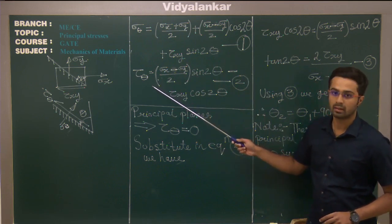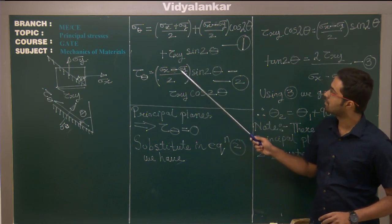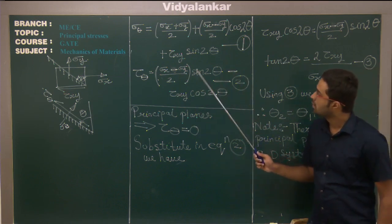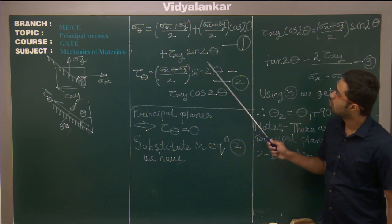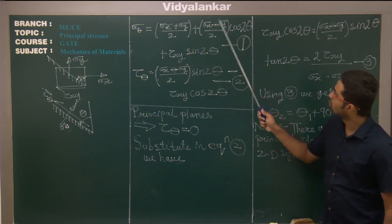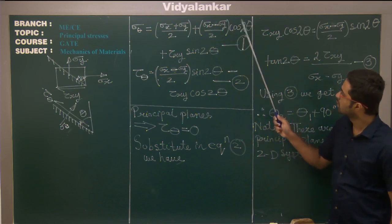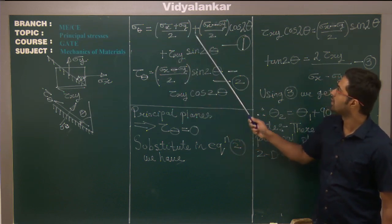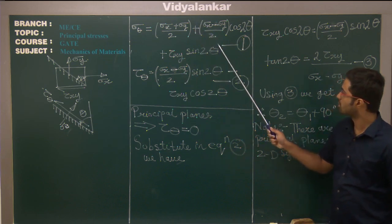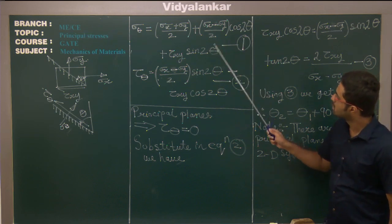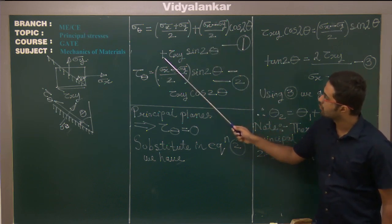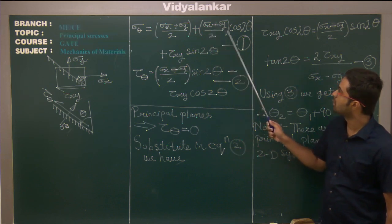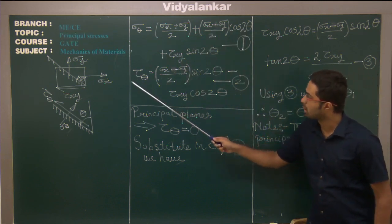I also need to evaluate what is tau theta. So tau theta is (sigma x minus sigma y)/2 times sin 2 theta minus tau xy cos 2 theta. It's easy to remember this formula — the only catch in tau theta is I replace cos 2 theta by sin 2 theta and sin 2 theta by cos 2 theta, and introduce a negative sign. So tau theta equals (sigma x minus sigma y)/2 times sin 2 theta minus tau xy cos 2 theta.